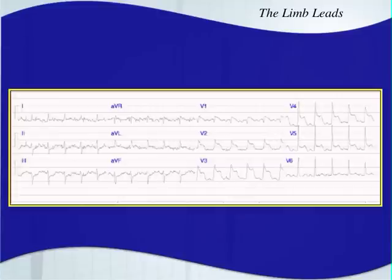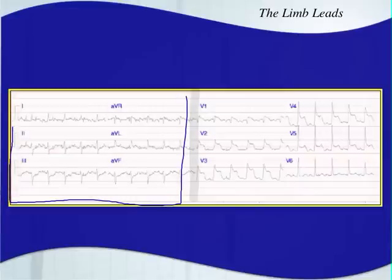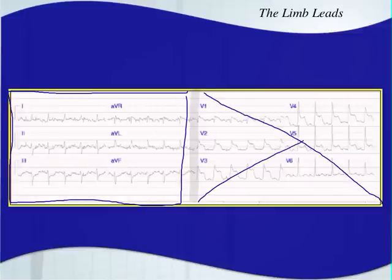For this discussion, we're just going to concentrate on the limb leads. Over on the left side, you have your six limb leads, and over on the right, you have your six precordial leads, V1 through V6, but we're not going to talk about any of those just yet. We're going to save that for a later discussion.